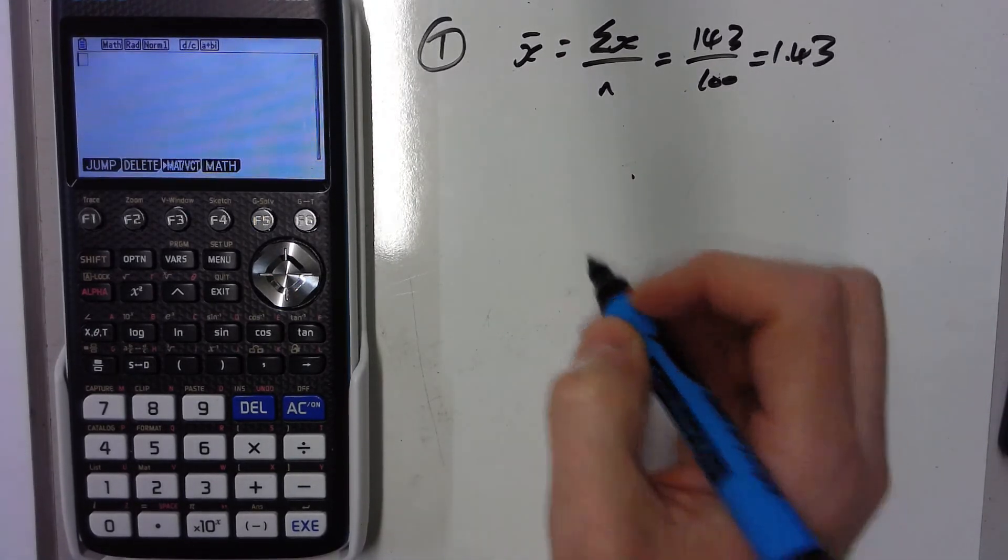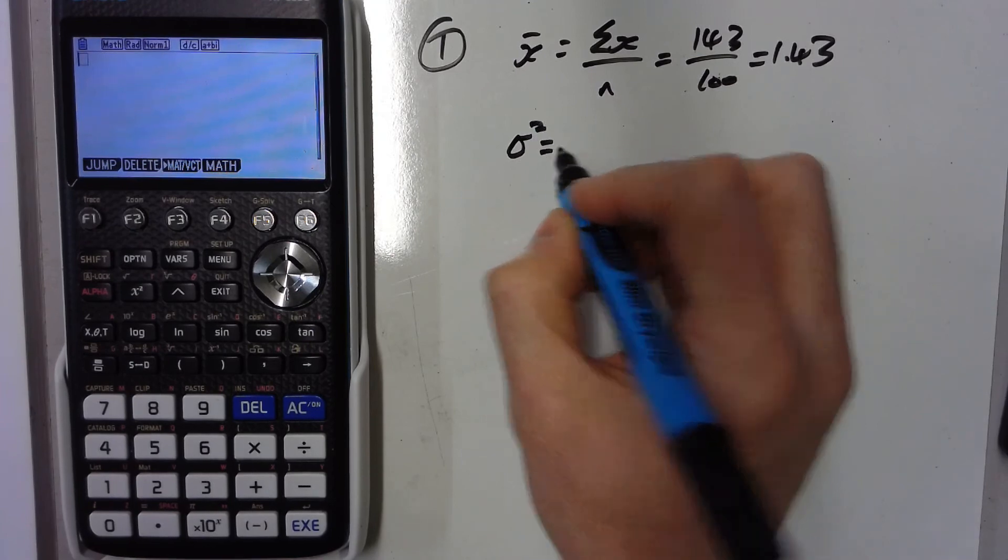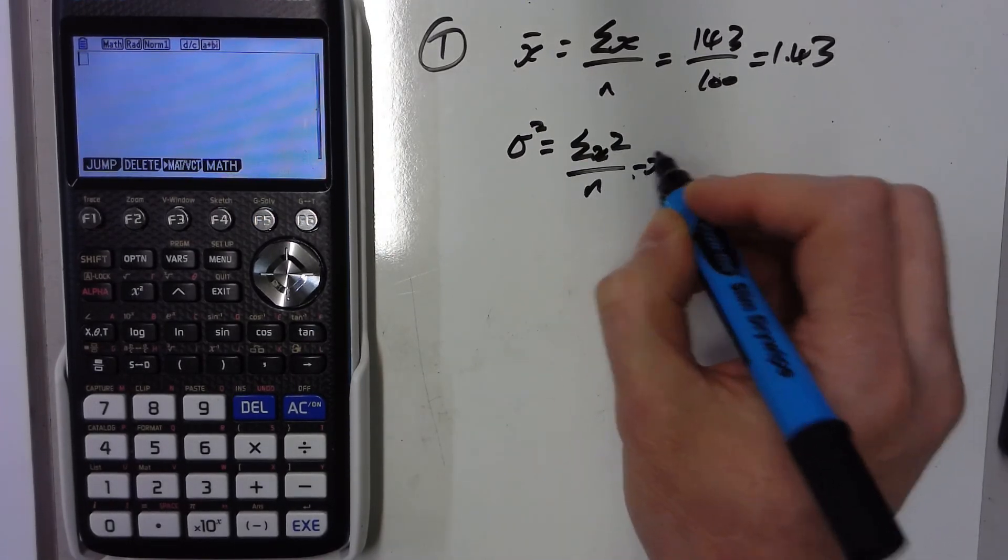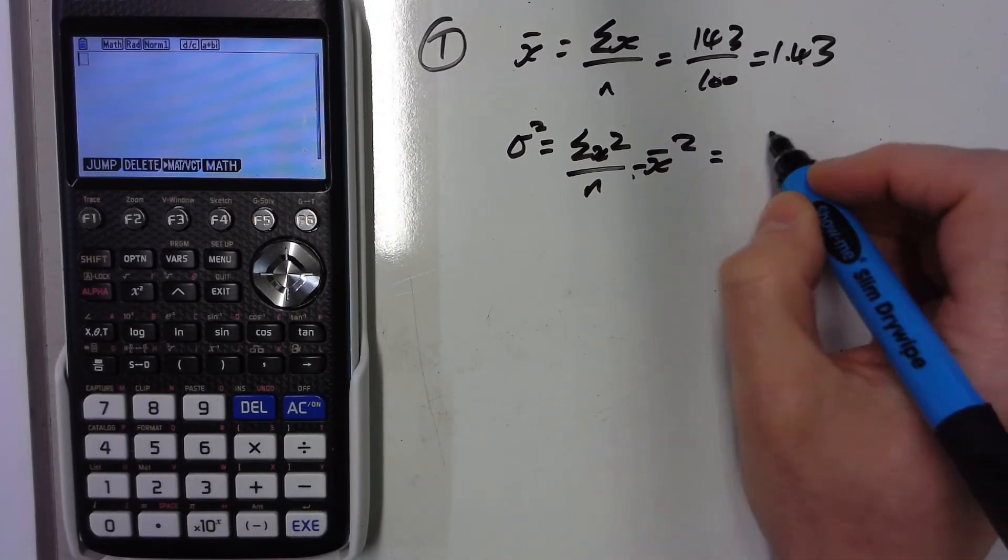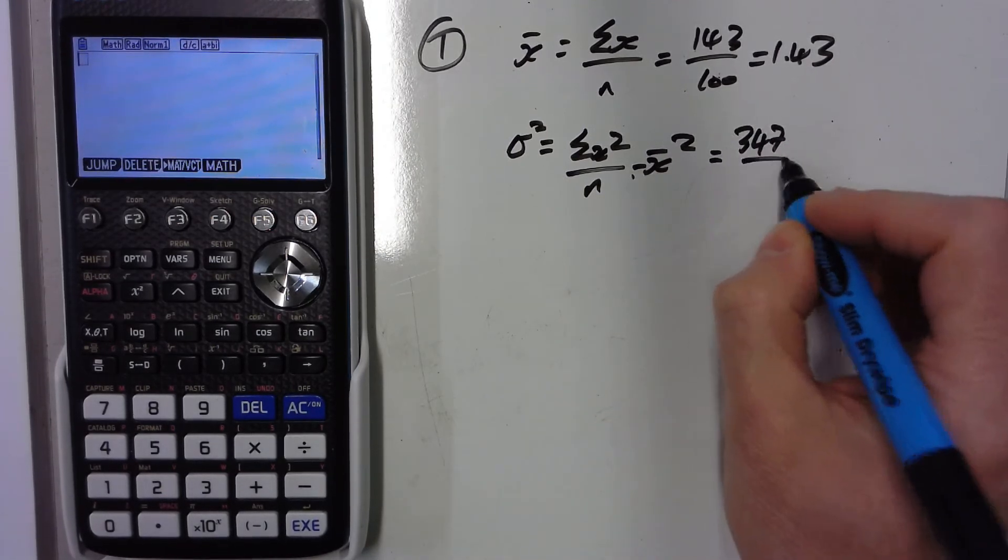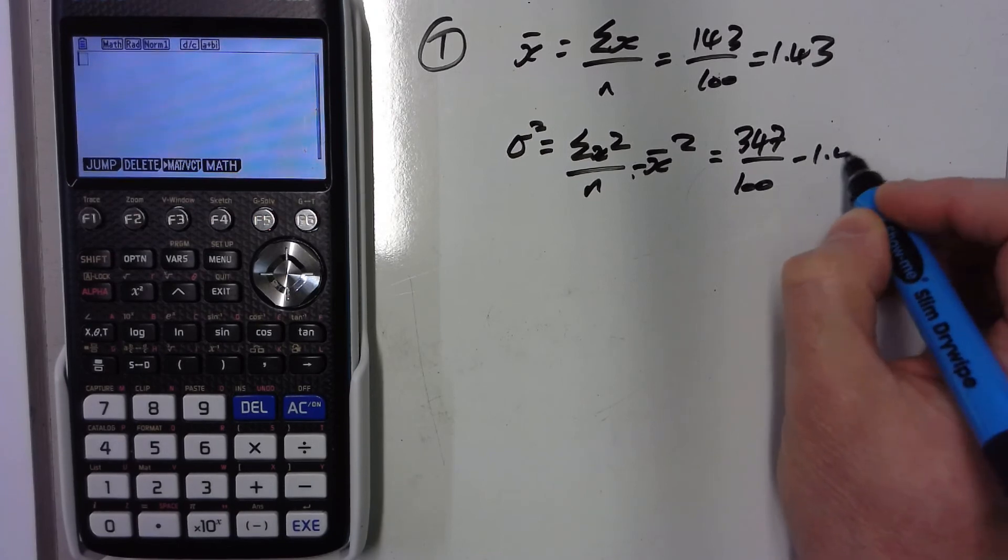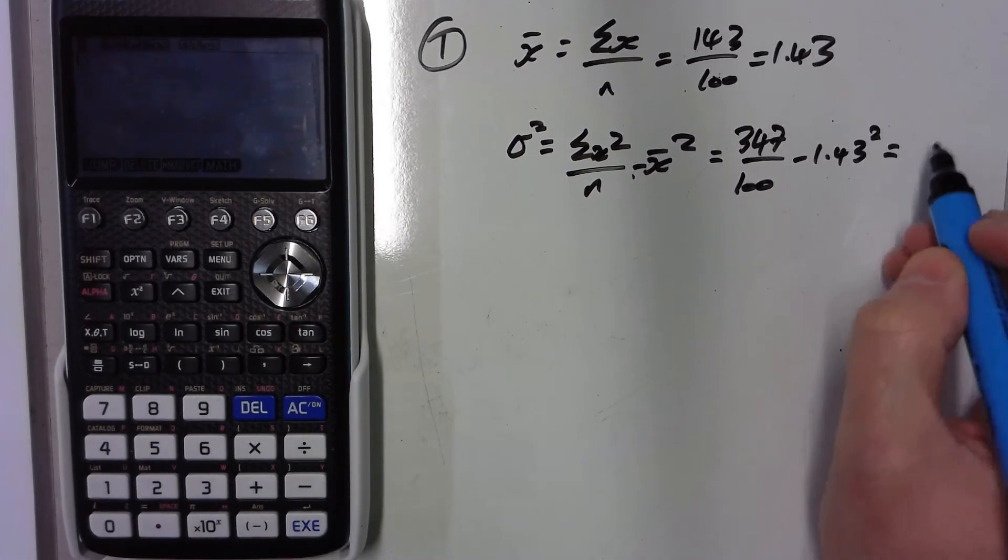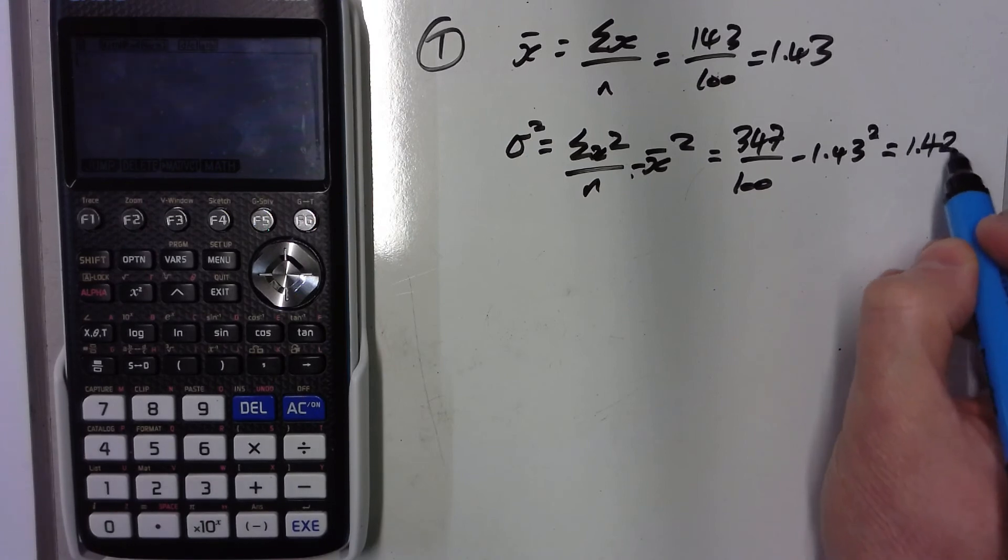We're also asked to find out what the variance is. And the variance is the sum of the x squareds divided by n minus the mean squared. Some of the x squareds we've been given as 347. So divide by that 100 and take away the 1.43 squared. And that works out to be 1.4251.